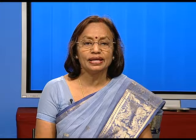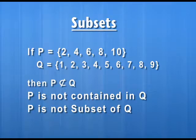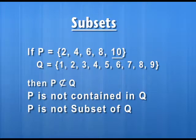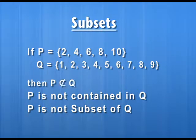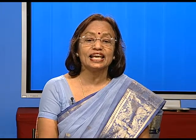Now let us include one more element in set P. Set P will now have five elements: 2, 4, 6, 8, and 10, with set Q remaining the same. We observe that only four elements of set P — 2, 4, 6, 8 — are in set Q, but the additional element 10 of P has not been included in set Q. We say that P is not contained in Q, written as P ⊄ Q, meaning P is not a subset of Q.